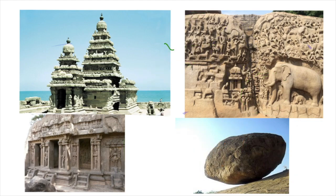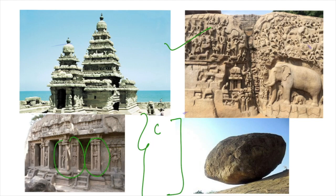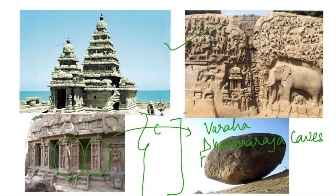After the rock relief, we will see another architectural form: cave temples. Here mandapas or pillared hall temples have been found. These are also rock-cut temples or shrines, and the most important ones are the Varaha cave, Dharmaraja cave, and Krishnamandapa.